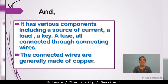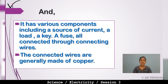An electric circuit also has various components including a source of current, a load, a key, and a fuse — all connected through connecting wires. The electric circuit has various components: a source of current, a load, a key, and a fuse, all connected through connecting wires. The connecting wires are generally made of copper.